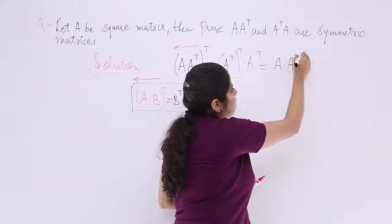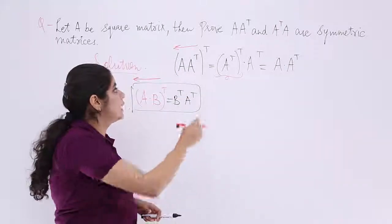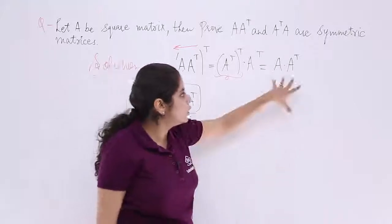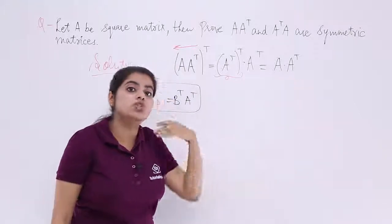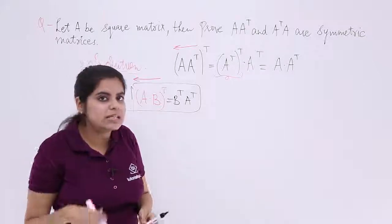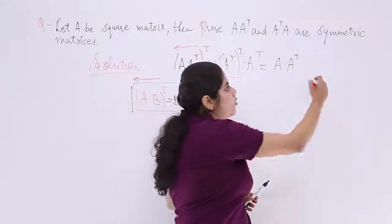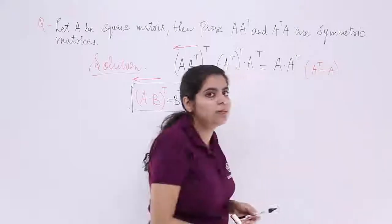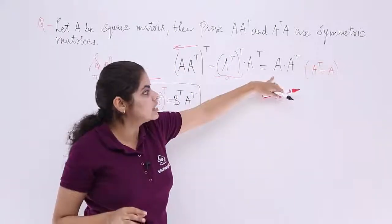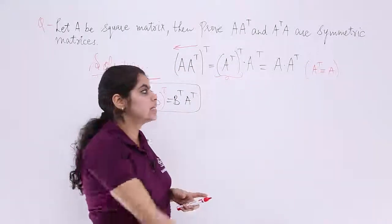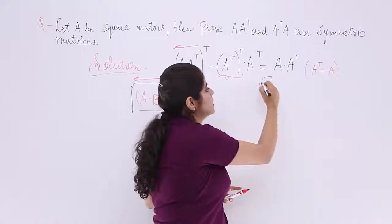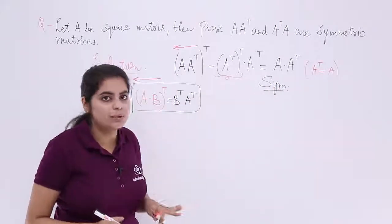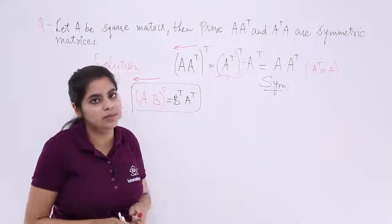You started with A A transpose and you got back A A transpose after taking the transpose. That means the transpose of A A transpose equals A A transpose itself — this is the case where the matrix equals its own transpose. There is no minus sign, so yes, it is a symmetric matrix, not skew-symmetric. The first part is done.